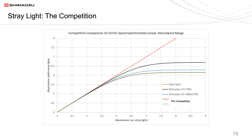Here we see stray light performance compared with real instruments using guaranteed specifications from instrument brochures — not typical specs. The Shimadzu UV-2700 has phenomenal stray light performance, a combination of being a double grating instrument with proprietary gratings designed for very low stray light levels — the best gratings in the industry. The competition (the red and dotted green lines) are an order of magnitude worse than the UV-2700 when comparing their guaranteed specs.